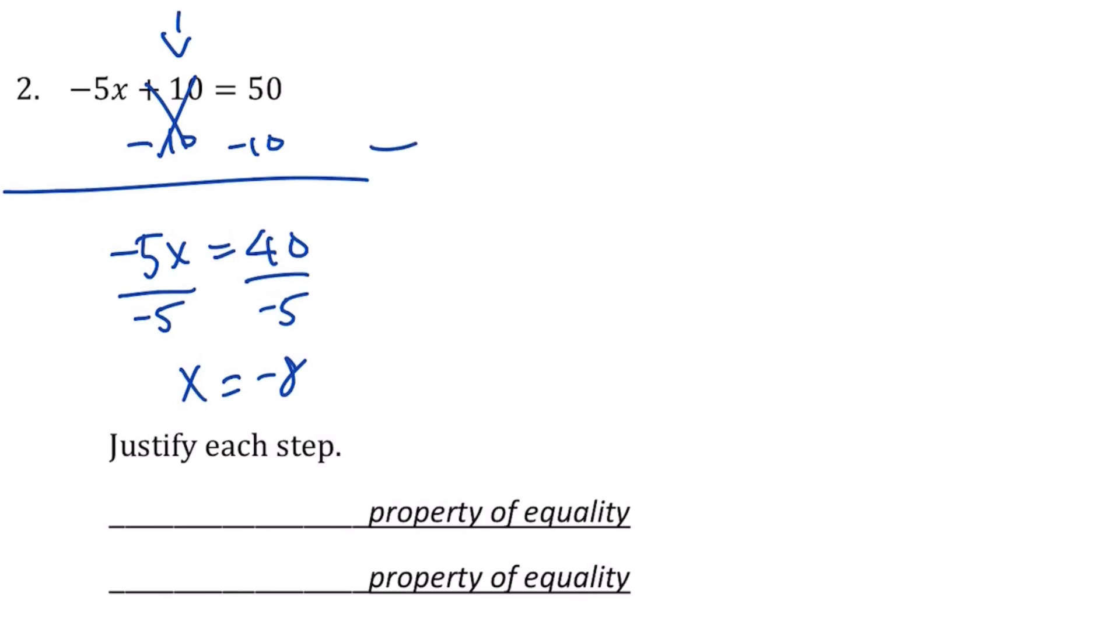Okay, so justify each step. The first thing I did was subtract, so I'm going to do the subtraction property of equality. The second thing I did was I divided by -5, so it's going to be the division property of equality. And yes, it's that easy.